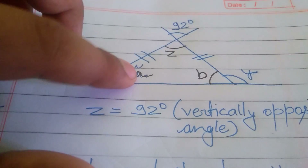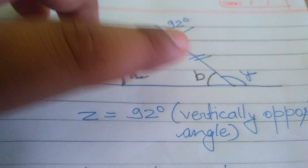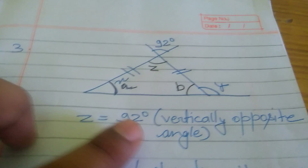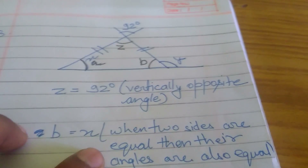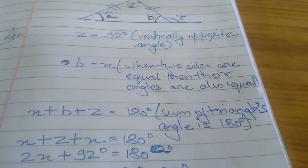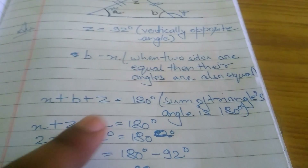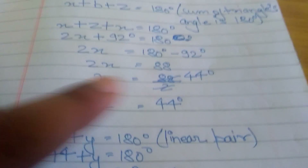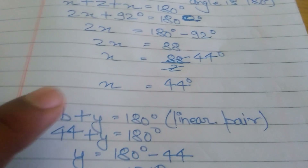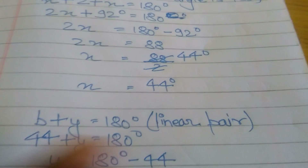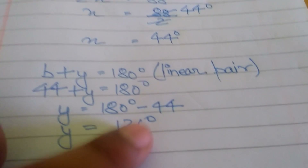This is the last question. This is 92 degrees. I have taken Z, B, X, and Y as additional. Z equals 92 degrees because of the vertical opposite angle. B equals X when two sides are equal, their angles are also equal. X plus B plus Z equals 180 by angle sum, so X plus X plus 92 equals 180. Solving gives X equals 44 degrees. Then B plus Y equals 180 by linear pair, so 44 plus Y equals 180, giving Y equals 136 degrees.